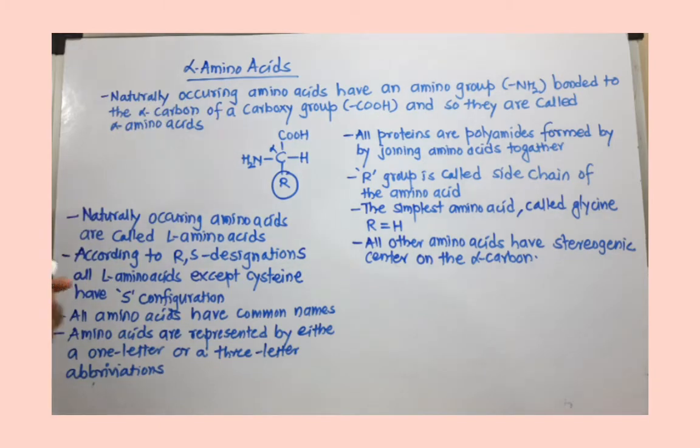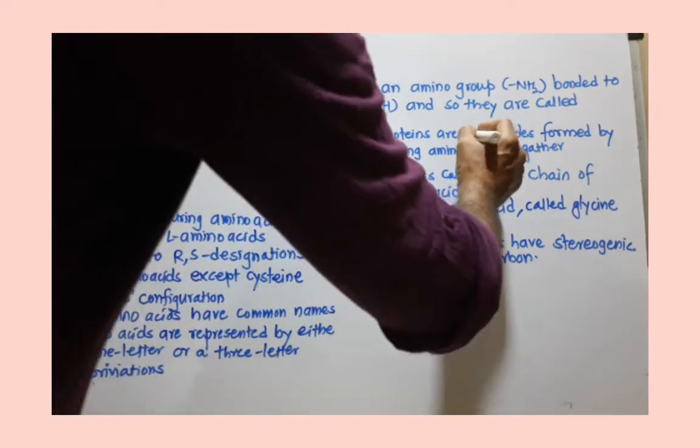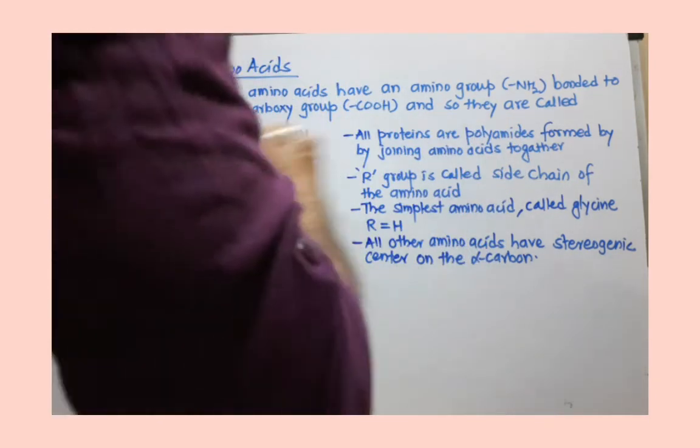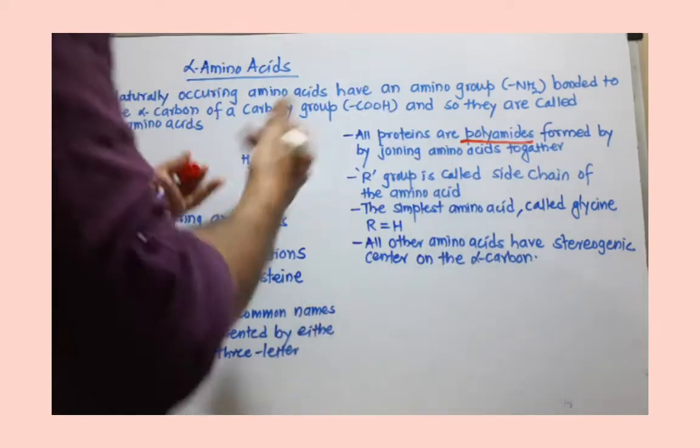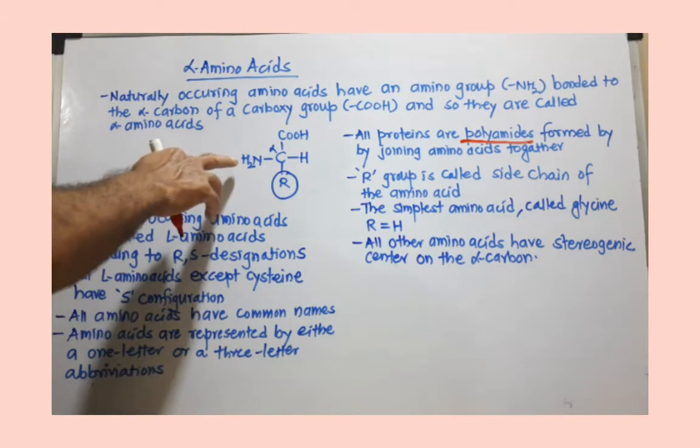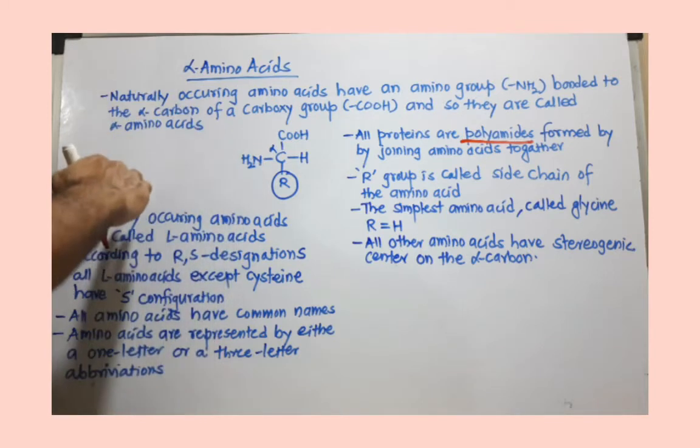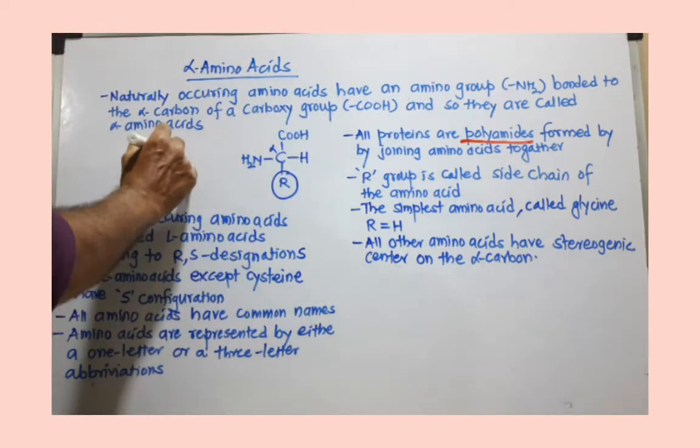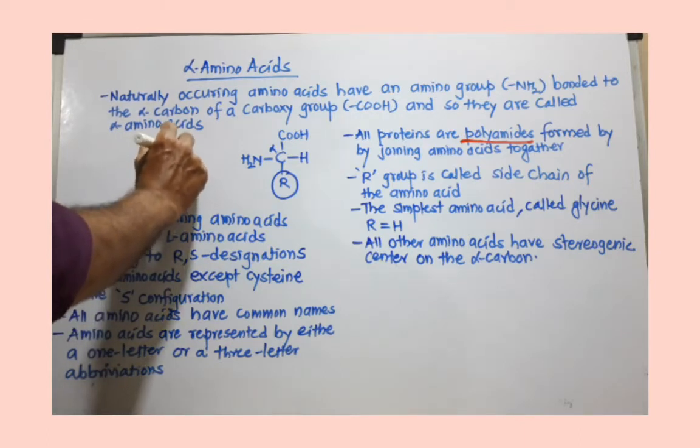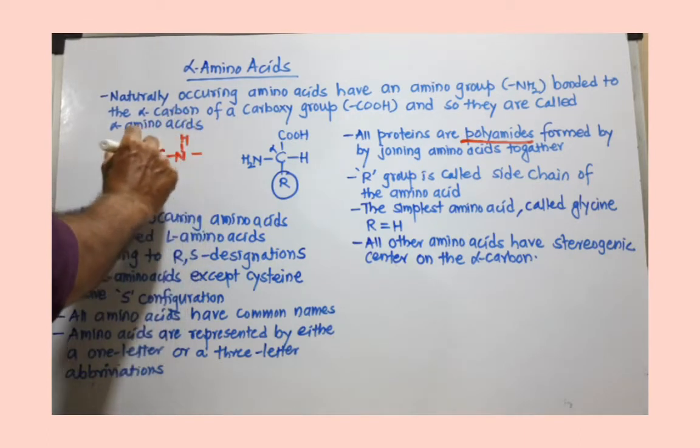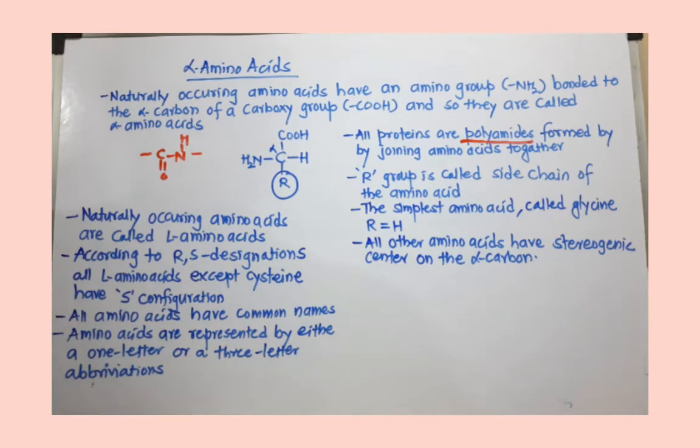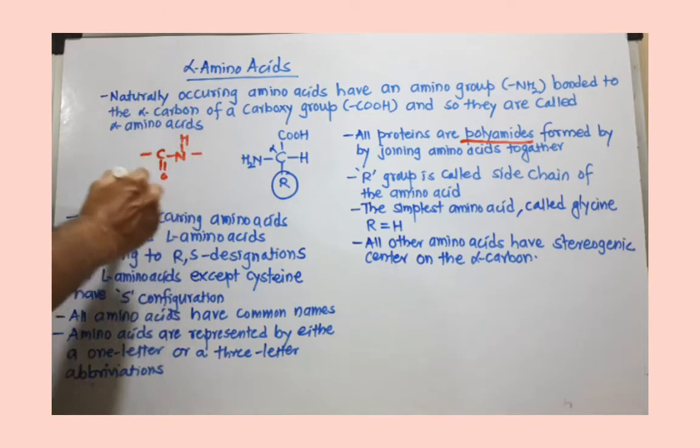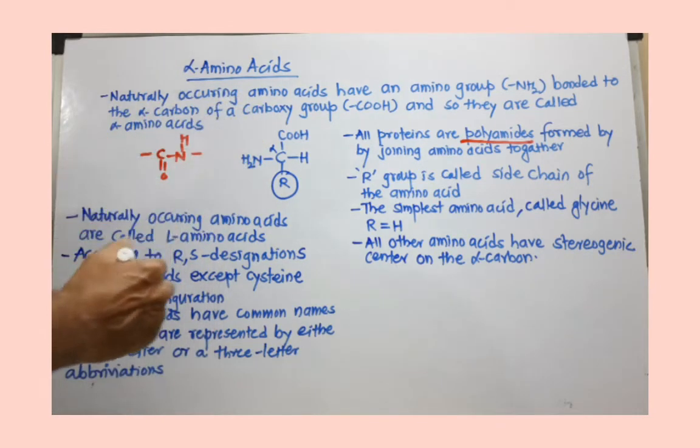All proteins are polyamides. When amino acids join together - the NH2 group of one amino acid and the COOH group of another - we get a CONH linkage. This linkage is called amide linkage, and it repeatedly appears in the protein.